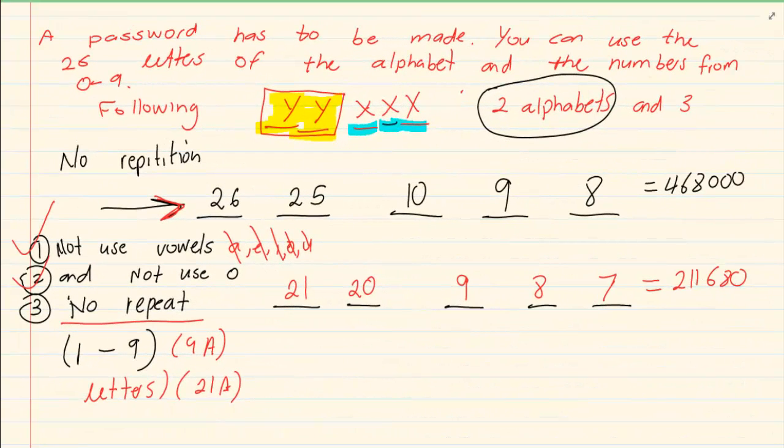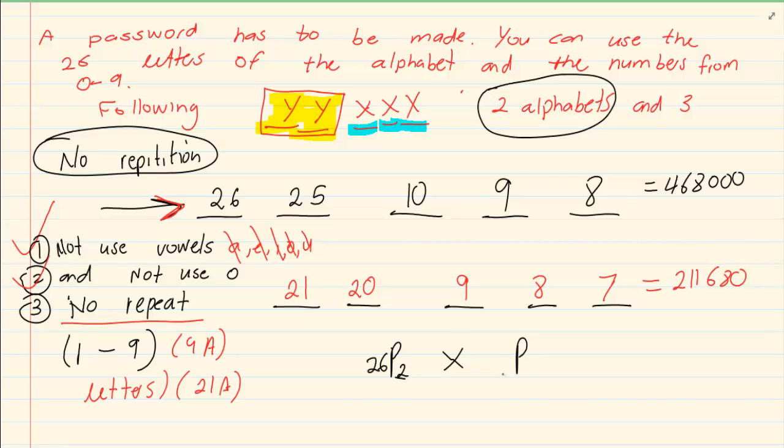If you look at this question it says a password has to be made and you can use the 26 letters of the alphabet but we have no repetition. Now what is it? We have 26 letters that is the amount of choices we have but we only have two positions. For the numbers we have 10 options but again for the positions we only have three. Now if you press that in your calculator you would get 468,000. Can you see that?